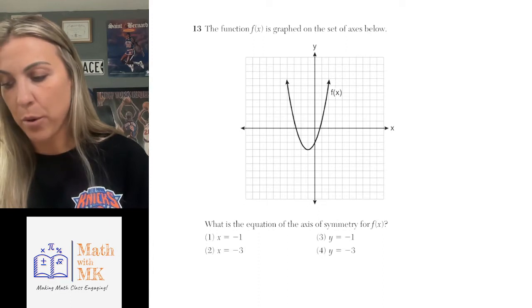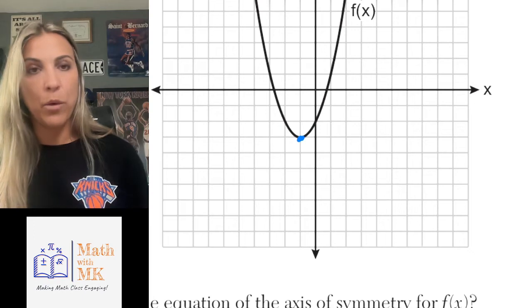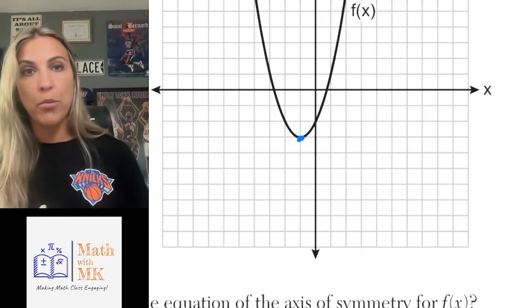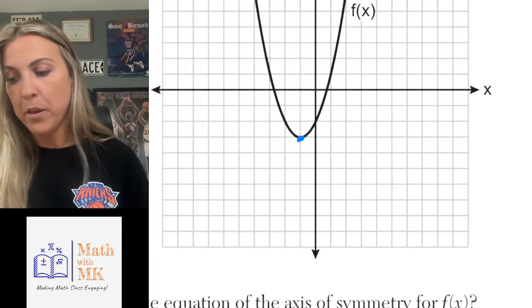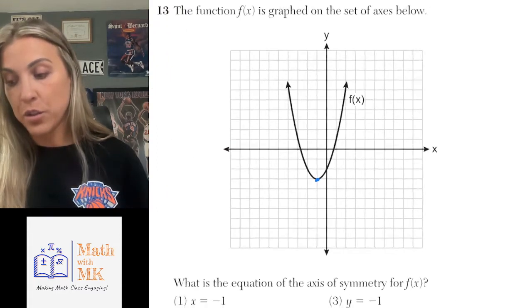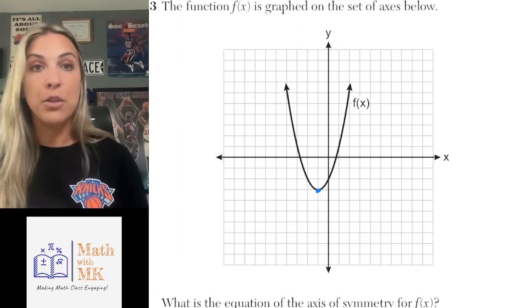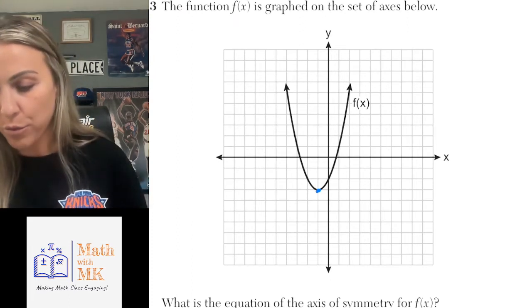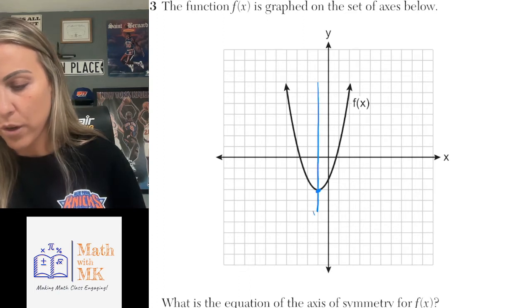So the vertex of the parabola — let's zoom in a little bit — is this blue dot that I'm drawing right here. It's the turning point, the maximum or minimum depending on which way your parabola is facing. So for this problem it is our minimum value and it is our turning point. The axis of symmetry is going to be a vertical line that passes through there — so it's going to be this blue line that I'm drawing now.